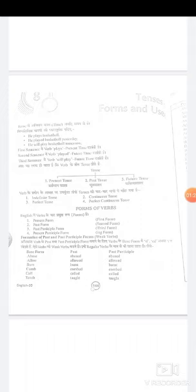The verb has four forms: present form (base form), past form, past participle form, and present participle form. These are also called first form, second form, third form, and -ing form. For example: abuse, abused, abused, abusing — یعنی کہ ایک کو first form، second form، third form اور ing form بھی کہتے ہیں۔